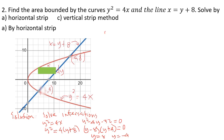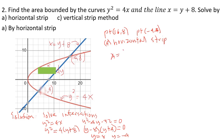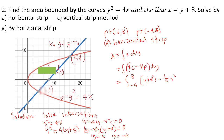The intersection points are (16, 8) and (4, −4). For letter A, horizontal strip: Area equals the integral of (x_line − x_parabola) dy, which equals the integral from −4 to 8 of (y + 8 − ¼y²) dy.